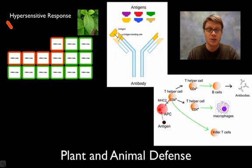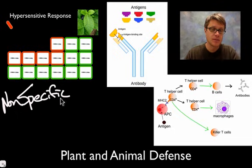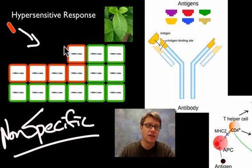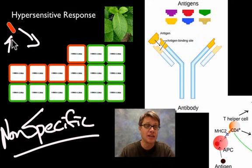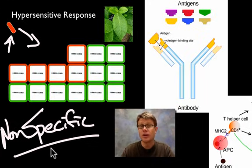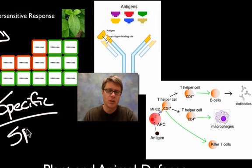Plants and animals differ in their defenses. Plants show non-specific defense — if something invades, they'll destroy the infected cells and harden the cells around it to fight infection, regardless of what the invader is. Animals have non-specific responses too: skin is one, and macrophages eat anything that gets past the skin layer.